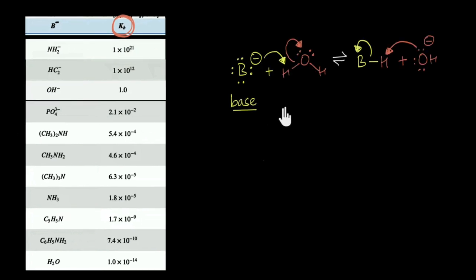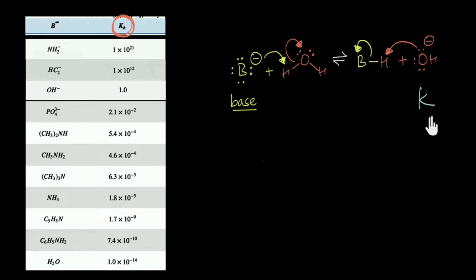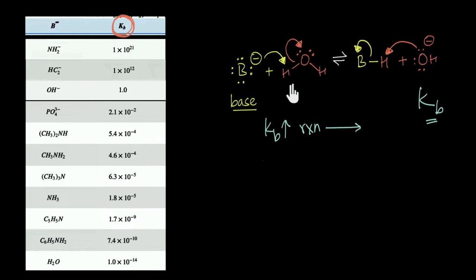Whenever we dissolve a base in water, there's a reversible reaction going on. The extent of this reversible reaction — that is, how far forward or backward this reaction is — can be experimentally determined by calculating the equilibrium constant K of this reaction. This equilibrium constant K is called KB, the base dissociation constant. Greater the value of KB, the more forward the reaction goes, meaning the base is better at abstracting H+ from water, so the strength of the base is higher.